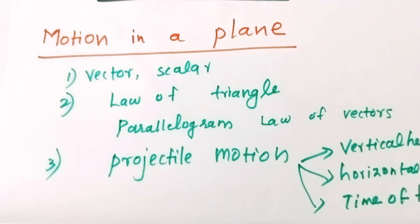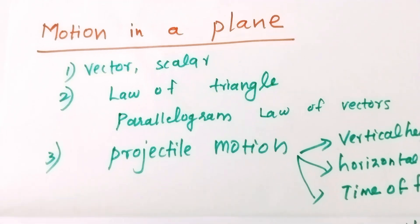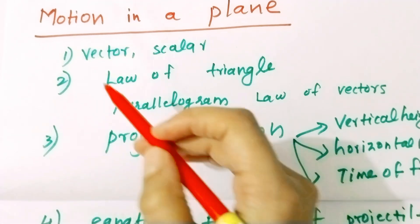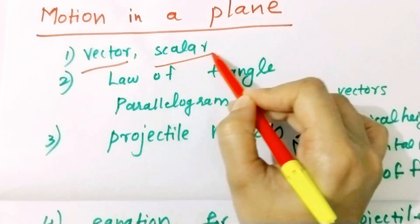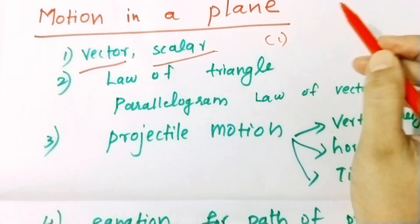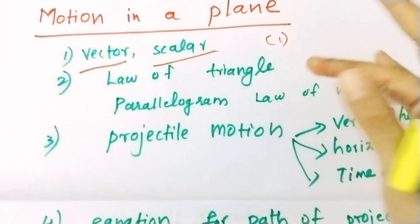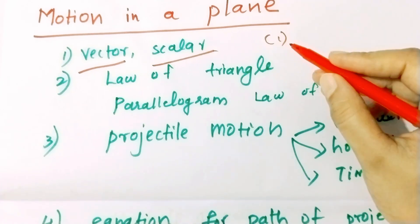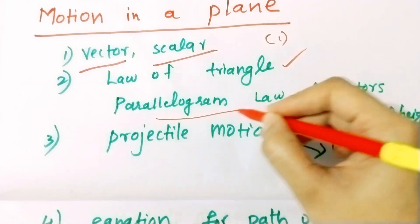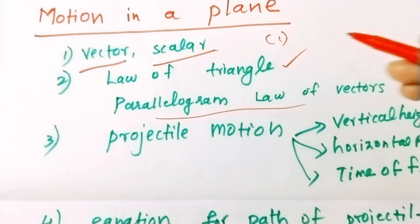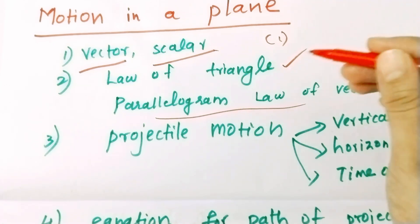Now we will start with the first part of the first chapter. You should focus on the topic of motion in the plane. There is a vector quantity and a scalar quantity — you can use these for one mark. You can choose the Law of Triangle, Law of Parallelogram, and Law of Vectors — triangle law of vector and parallelogram law of vector — for a two mark question.